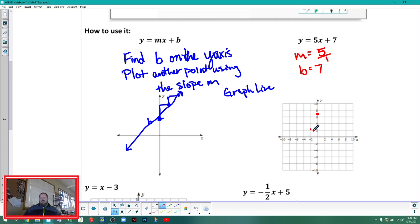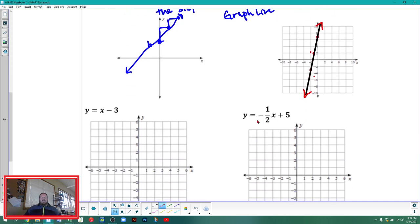Let me try that again. Down 5, I guess that's right here, and left 1. So now that I have those points, I can graph my line.